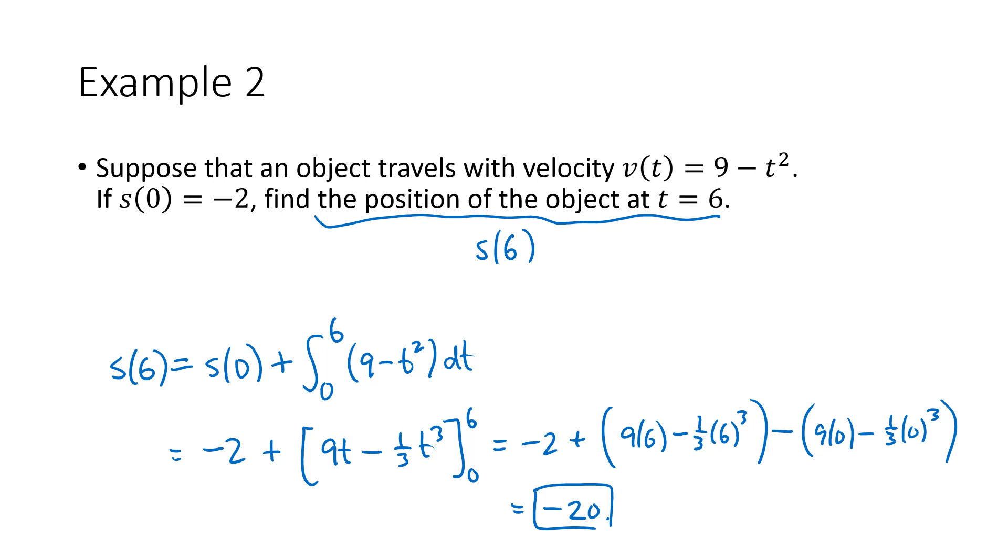Now a negative answer could be something that makes sense here. There's nothing that tells us that a negative position wouldn't make sense. This just means that the object started two units in the negative direction and ended up 20 units in the negative direction.